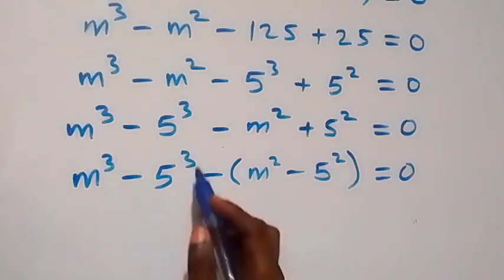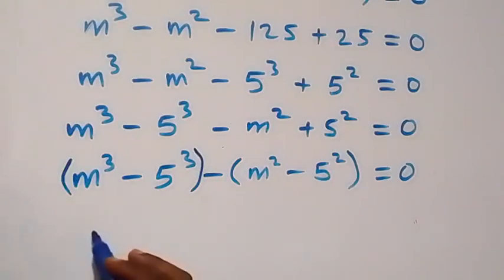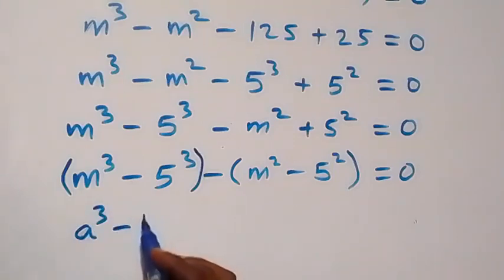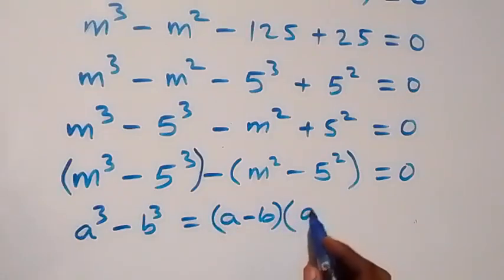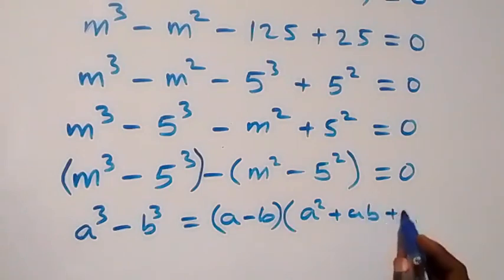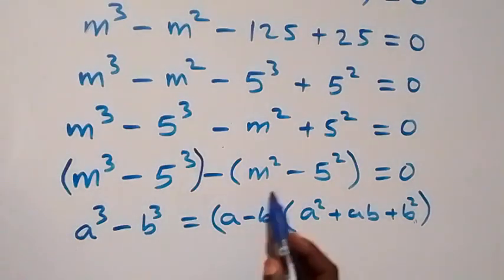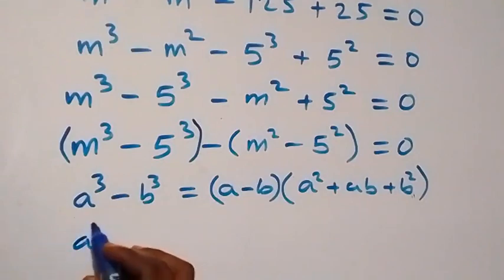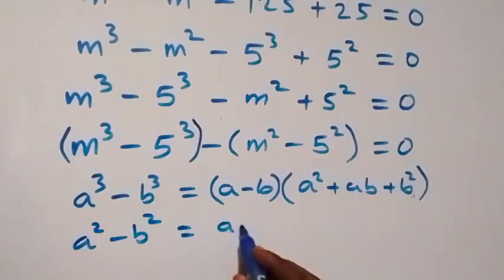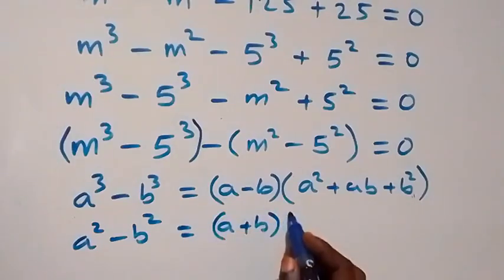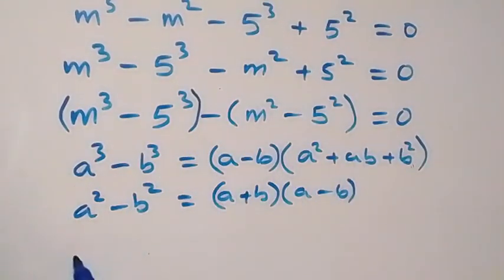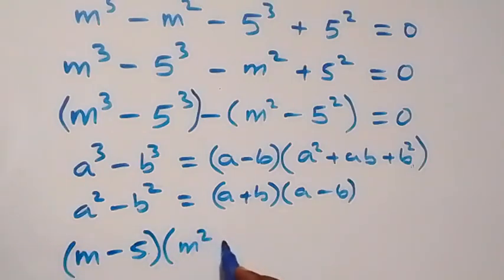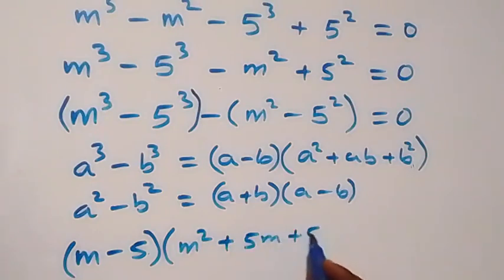We group this together. Applying the identity for the difference of two cubes — a cubed minus b cubed equals a minus b times open bracket a squared plus ab plus b squared — the first bracket gives us m minus 5 times open bracket m squared plus 5m plus 5 squared, close bracket.